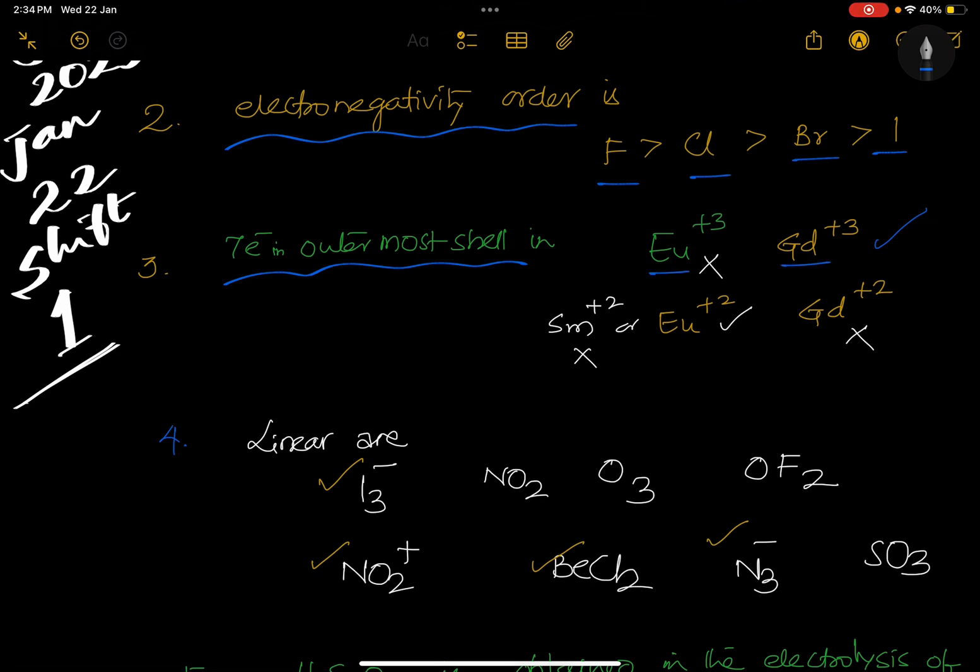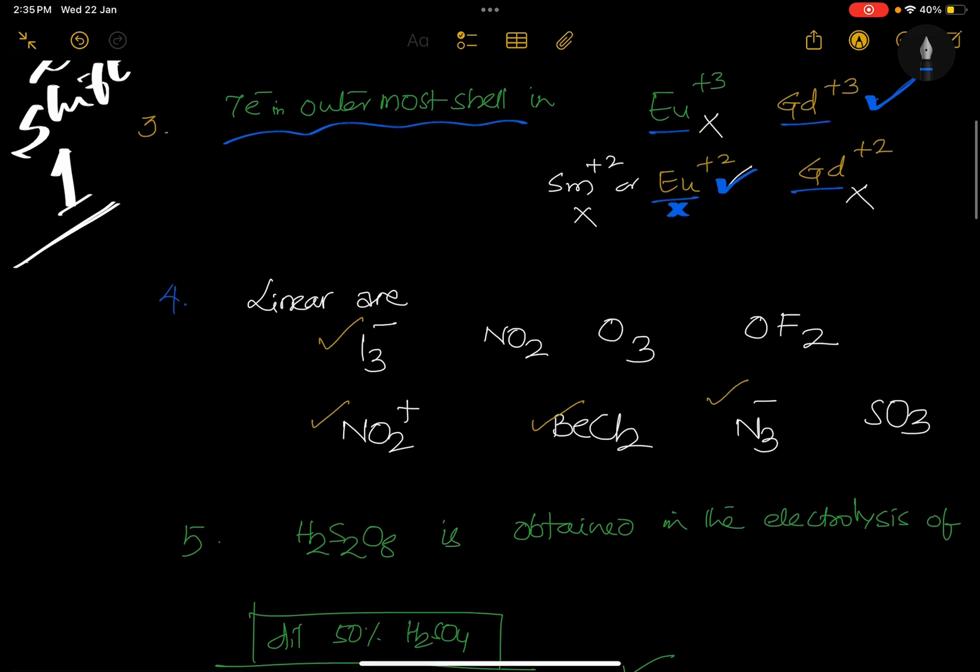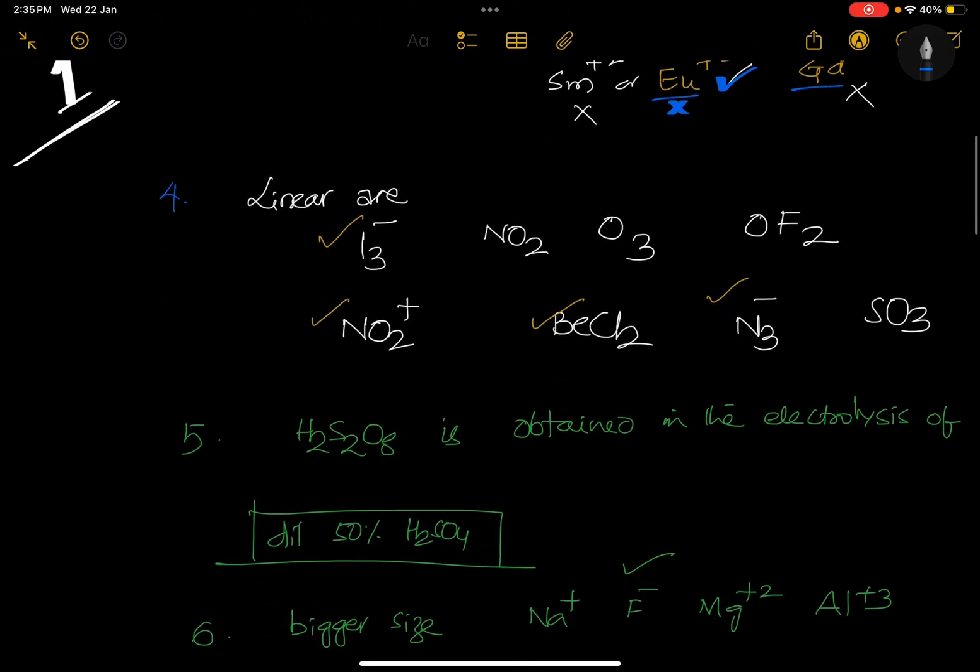Students are saying Gd+3 is the right one. It cannot be Eu+2 because it will also have the same. So if both are even like that, then we'll see. But it may be Sm+2, okay. Memory based, so it's okay.